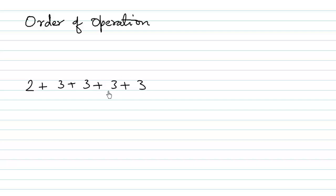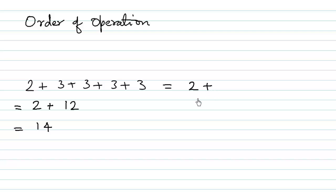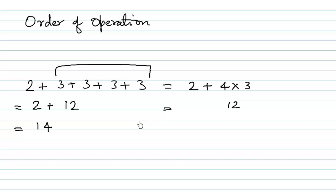So 2 plus 3 plus 3 plus 3 plus 3. What we can do is first we can add all the 3s together. So 3 plus 3 is 6, 6 plus 3 is 9, 9 plus 3 is 12. So we have 2 plus 12 and that is 14. But we can do the same thing another way.